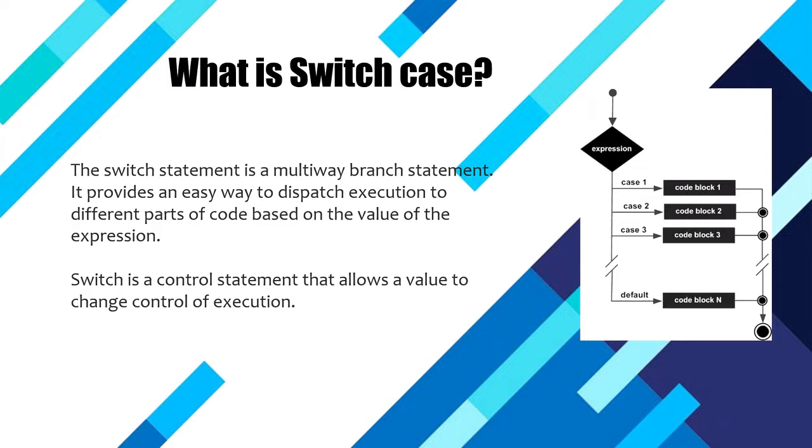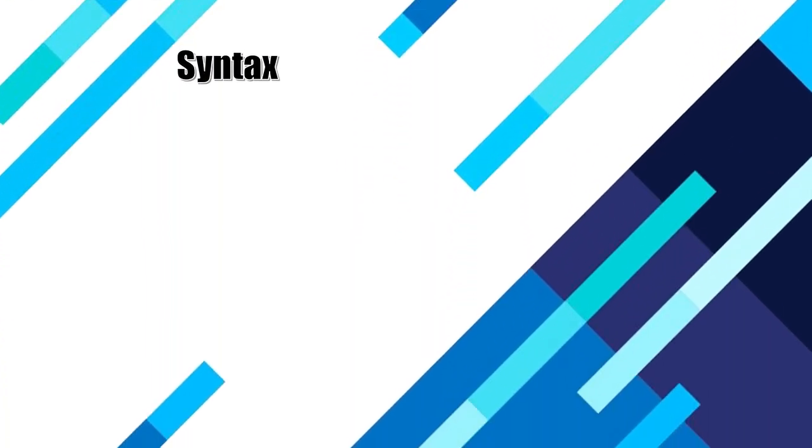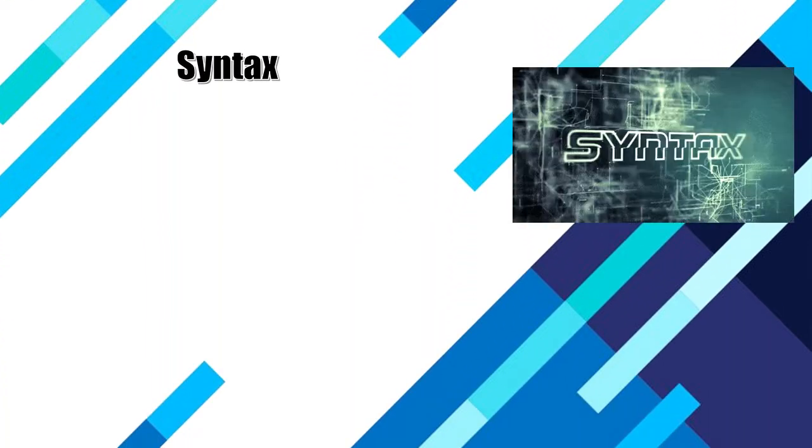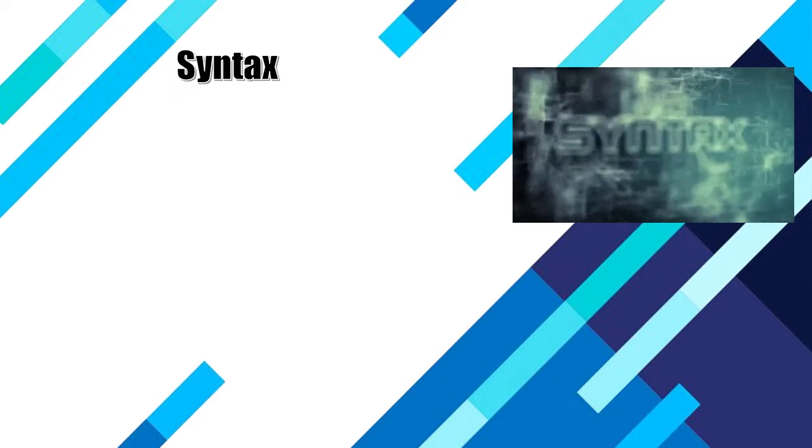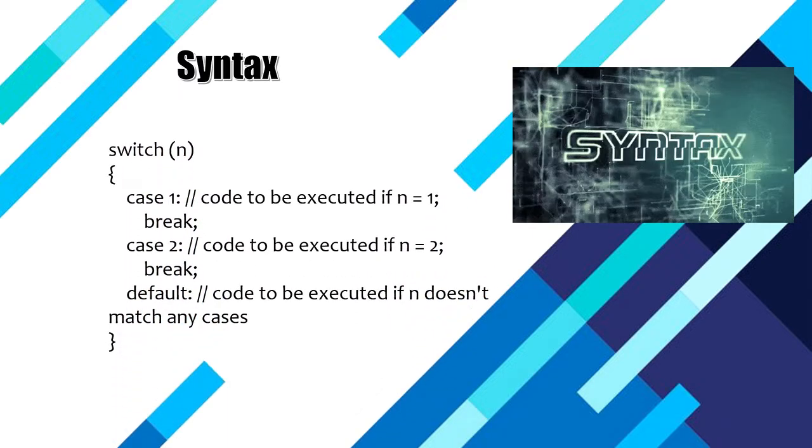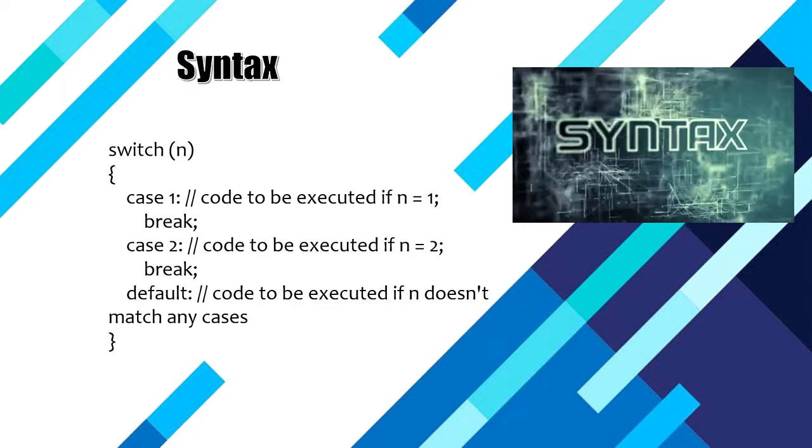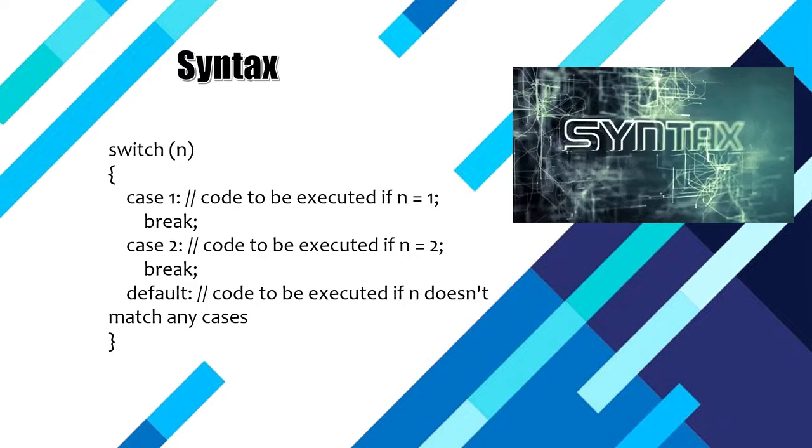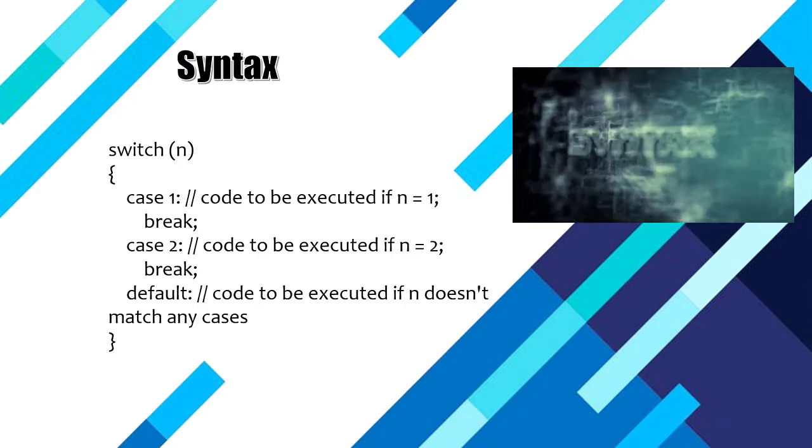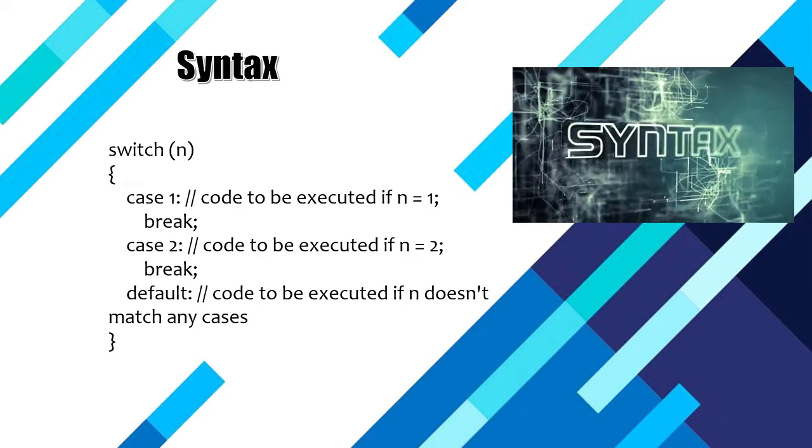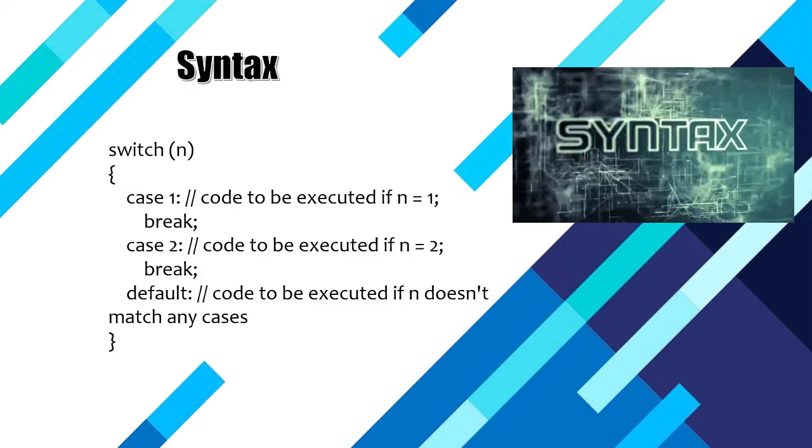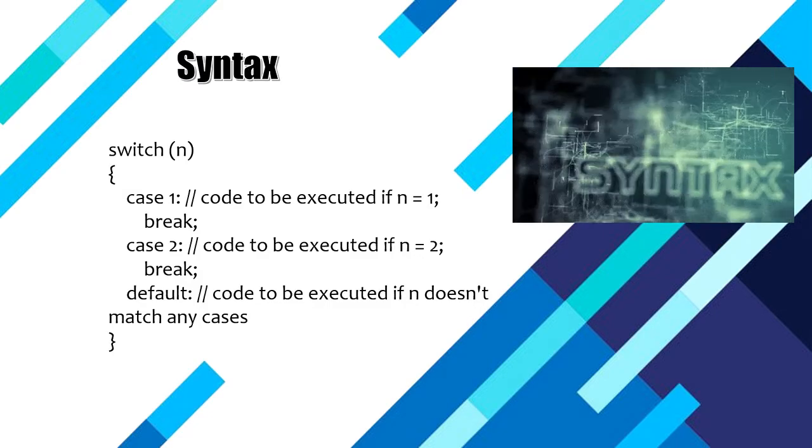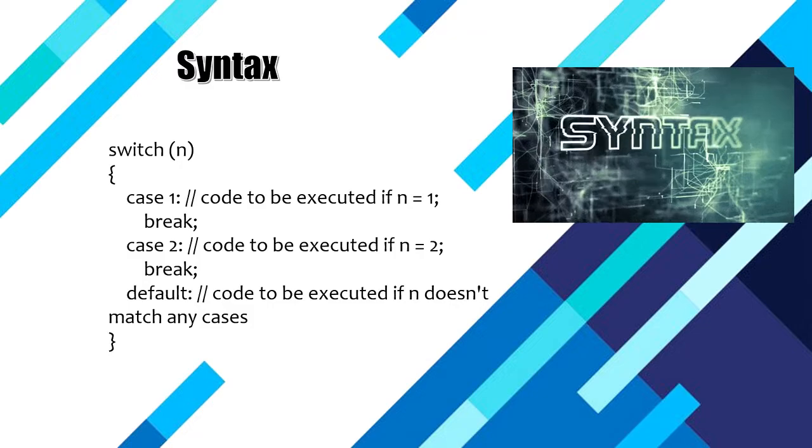Let's see the syntax of switch case. Switch n, where n is the variable we define. Then case 1 has code to be executed if n equals 1, then we break. Case 2 has code to be executed if n equals 2, then we break.